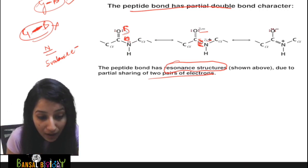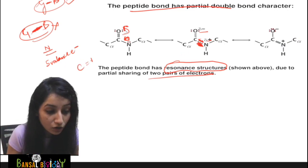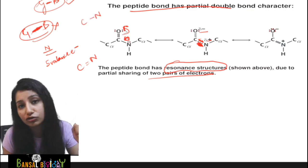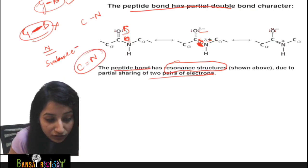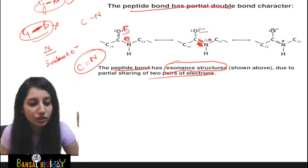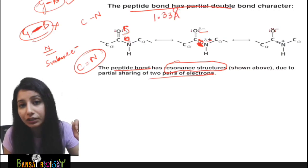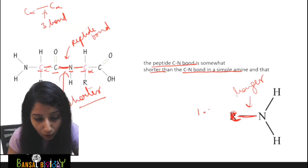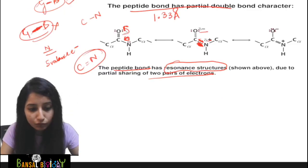Similarly, if a partial double bond is formed, the closeness between the atoms will be greater. Carbon and nitrogen will be more close to each other. So the length of the peptide bond is 1.33 angstroms, while the length of a regular C-N bond is 1.45 angstroms.